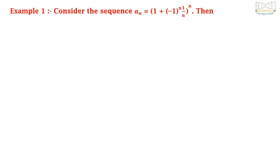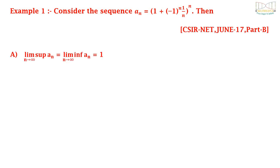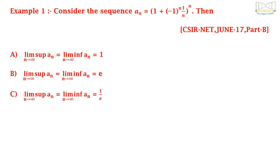Example 1: consider the sequence a_n = (1 + (-1)^n · (1/n))^n. The options are: (A) lim sup a_n = lim inf a_n = 1; (B) lim sup a_n = lim inf a_n = e; (C) lim sup a_n = lim inf a_n = 1/e; (D) lim sup a_n = e and lim inf a_n = 1/e. This question was asked in CSIR NET June 2017 Part B.